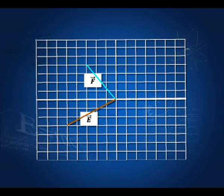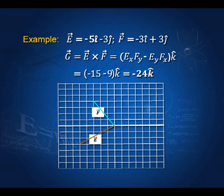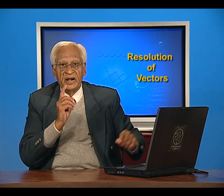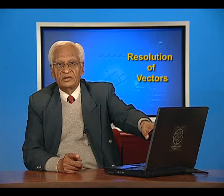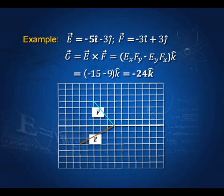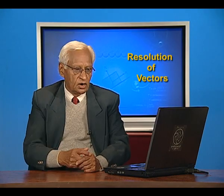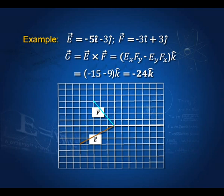Let us take another example. Here we have vectors E equals minus 5 i-cap minus 3 j-cap and F equals minus 3 i-cap plus 3 j-cap. The product vector G is perpendicular to both E and F, and since E and F are in the x-y plane, vector G must be in the z direction. We find vector G equals E x F y minus E y F x times k-cap. Substituting the component values gives G equals minus 24 k-cap, meaning G is in the minus z direction. You can verify this using the right-hand screw rule that E cross F points in the minus z direction.